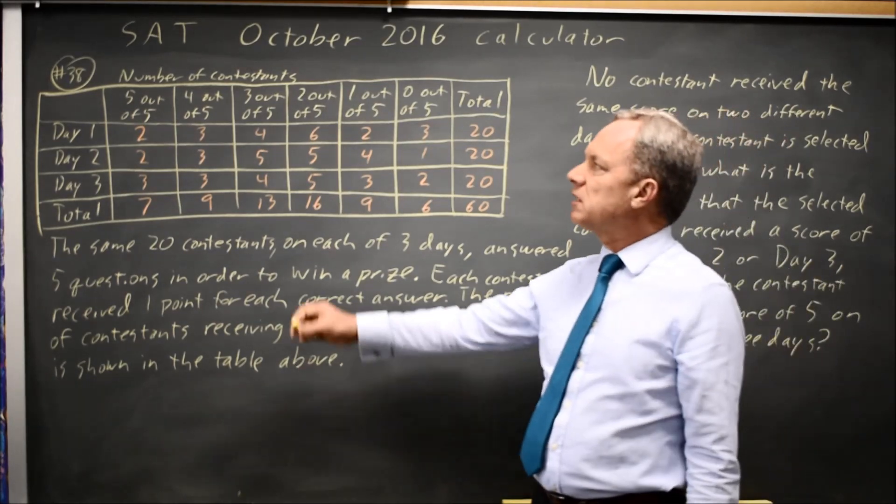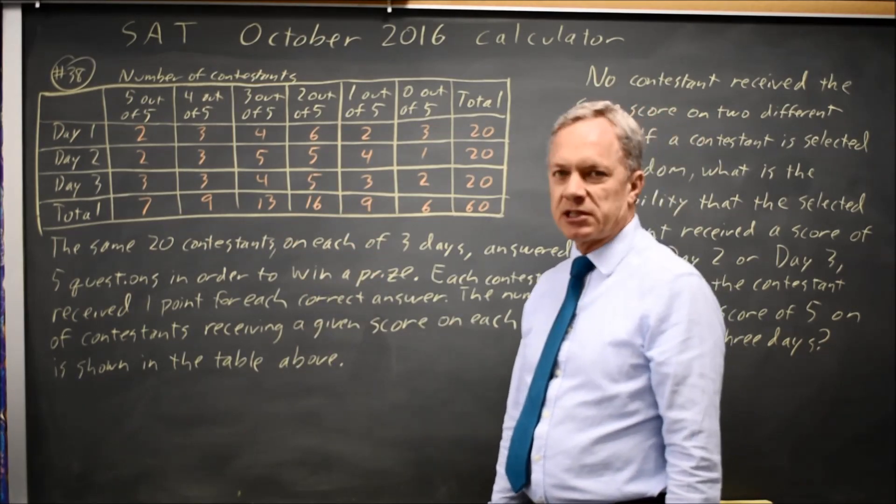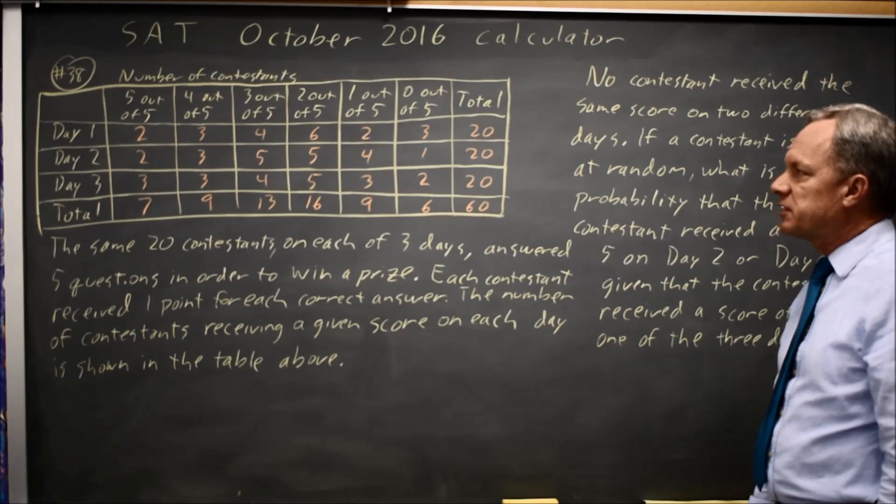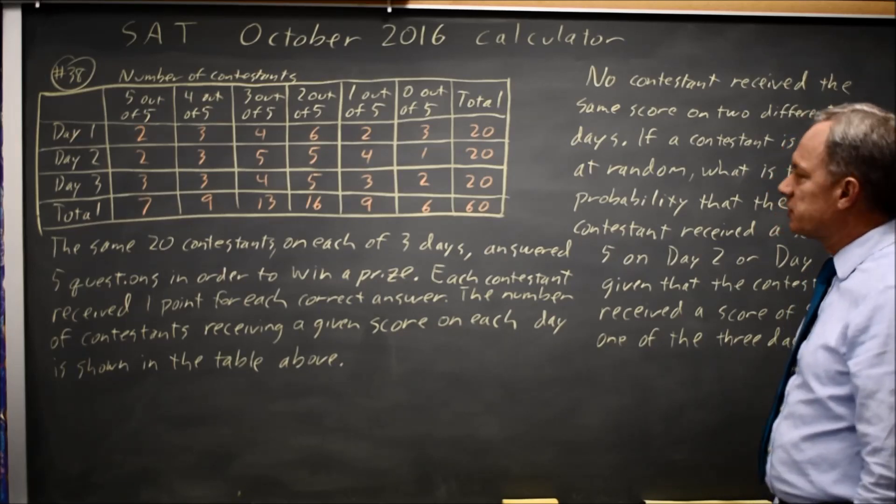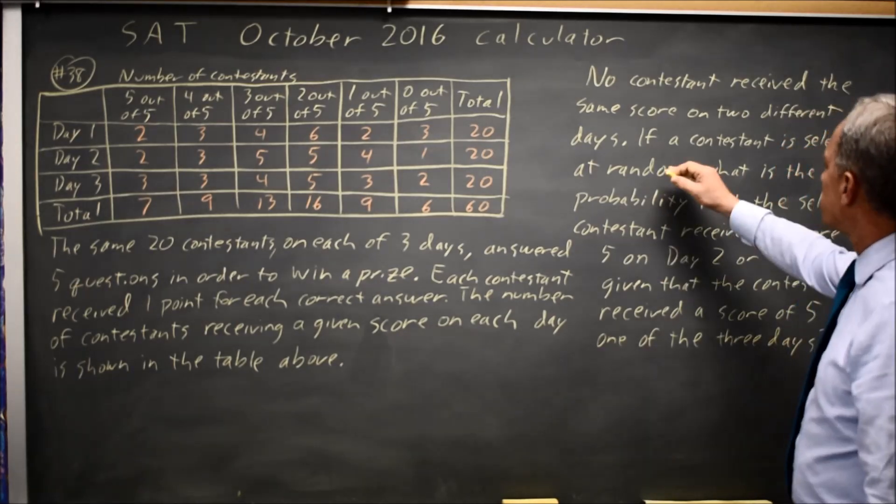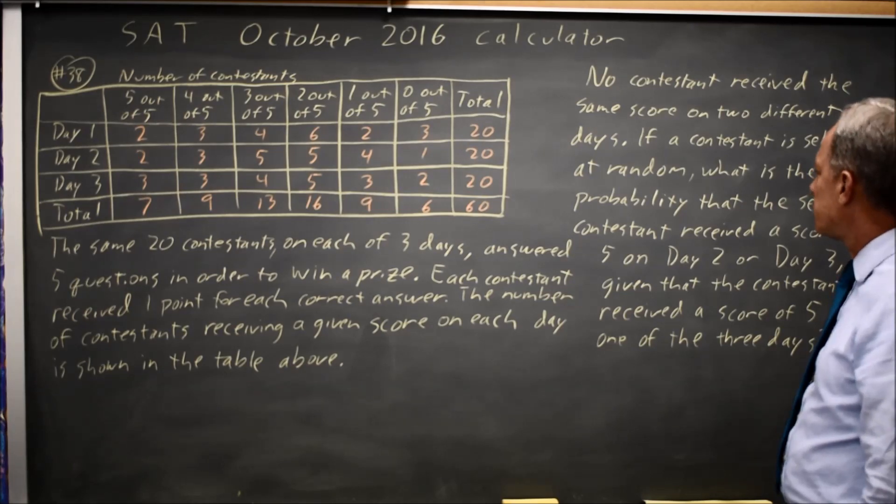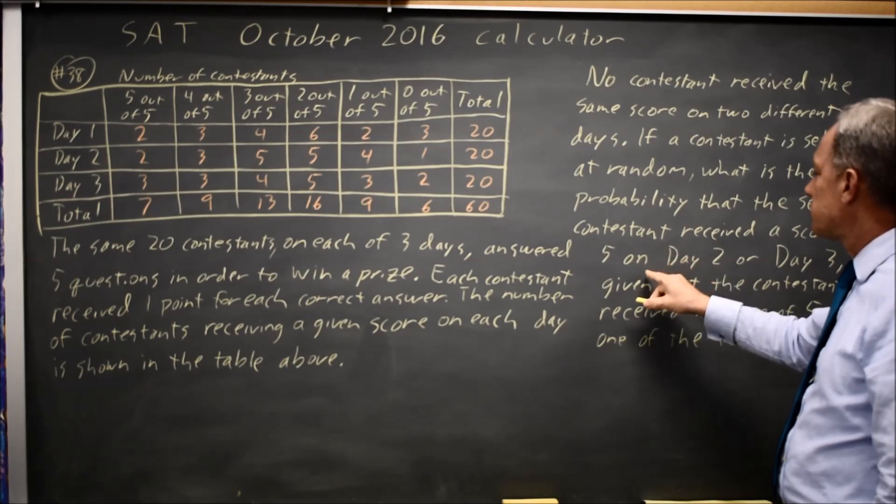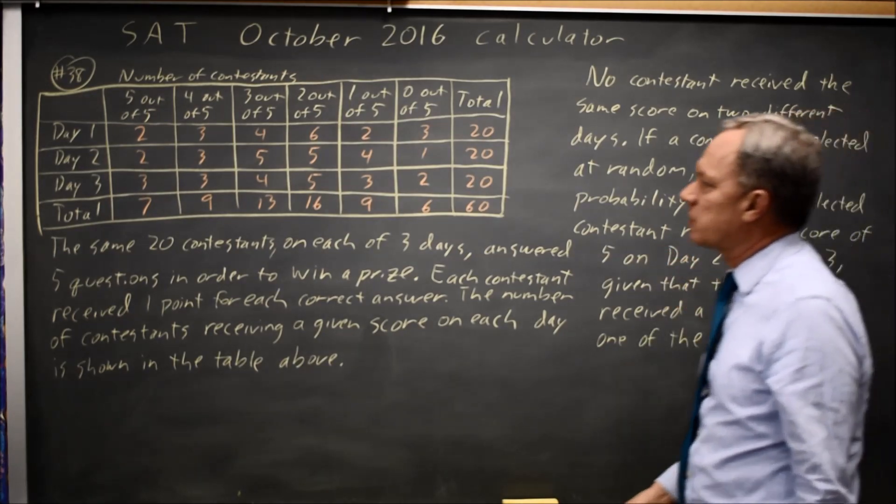College Board gives us a table showing the outcomes for contestants in a game show. They tell us that no contestant received the same score on two different days. The question asks for a probability from this table: what is the probability that a randomly selected contestant received a score of five on day two or day three,